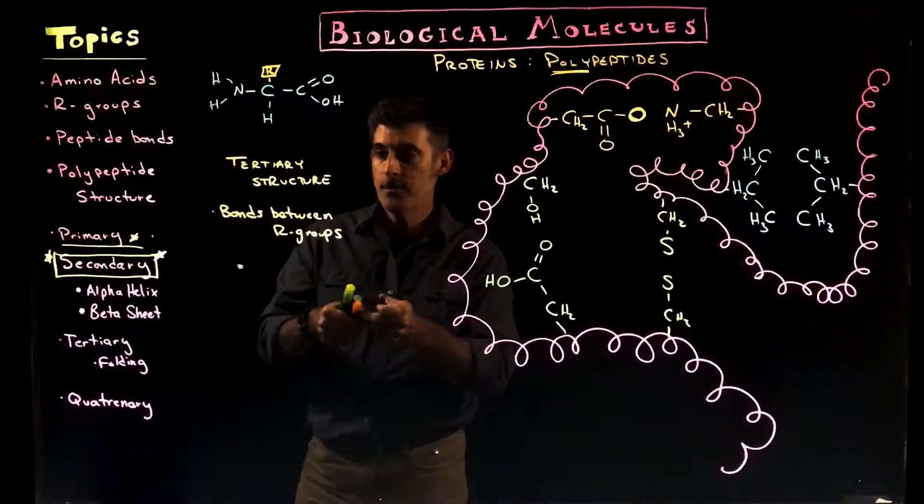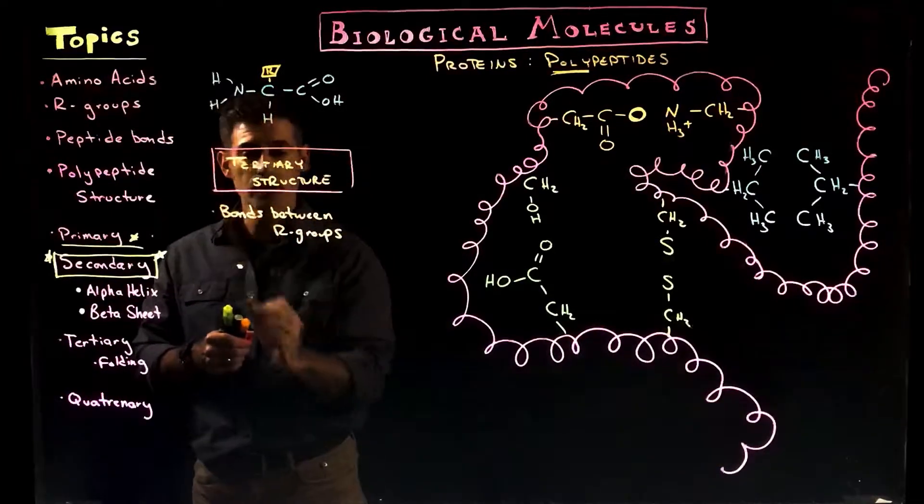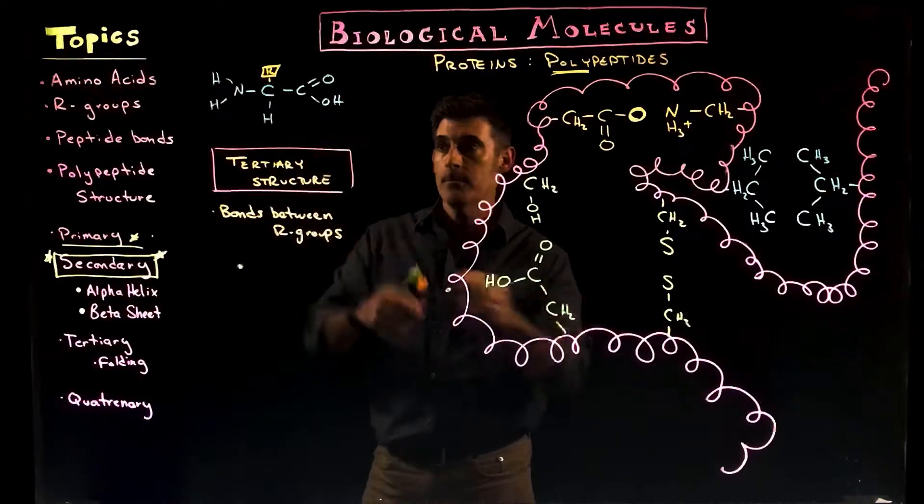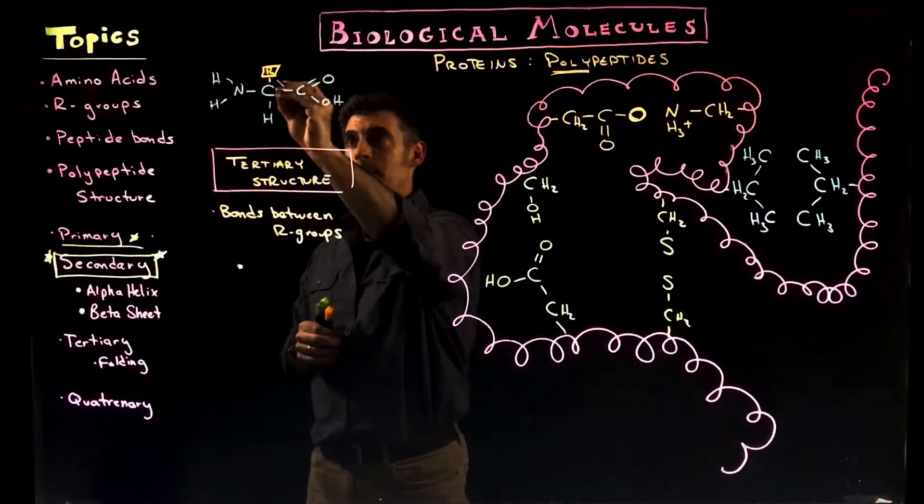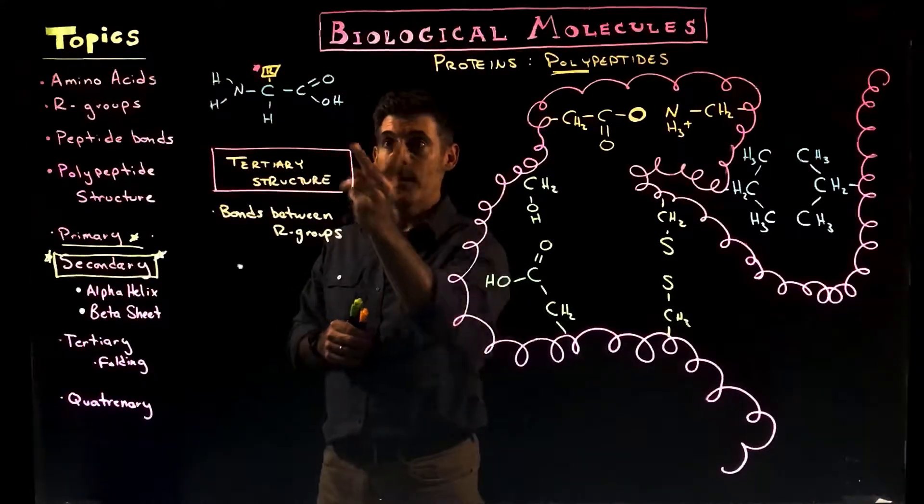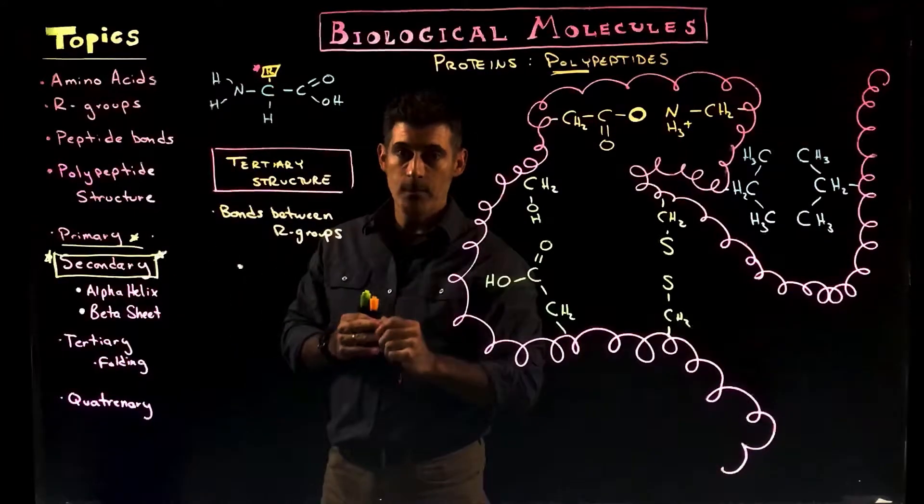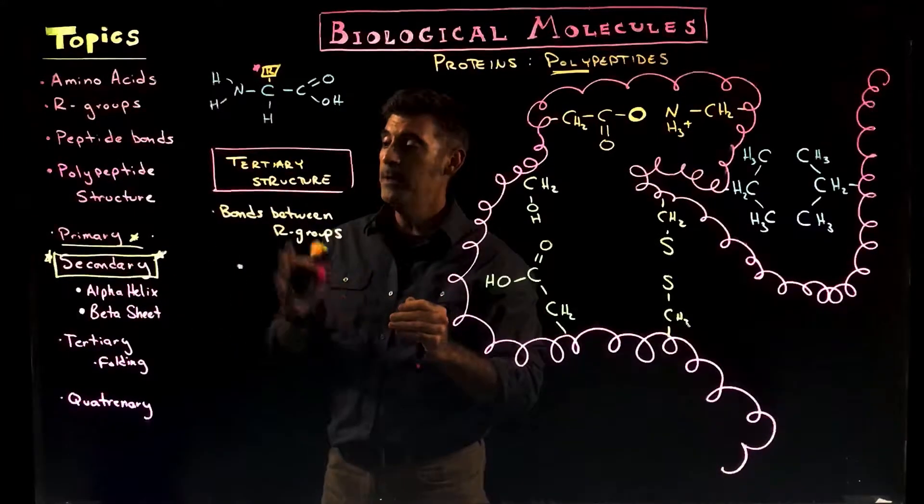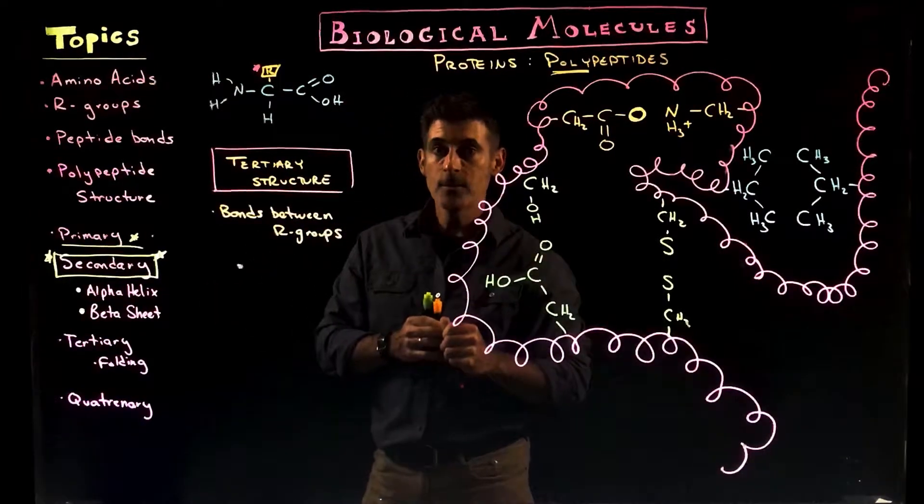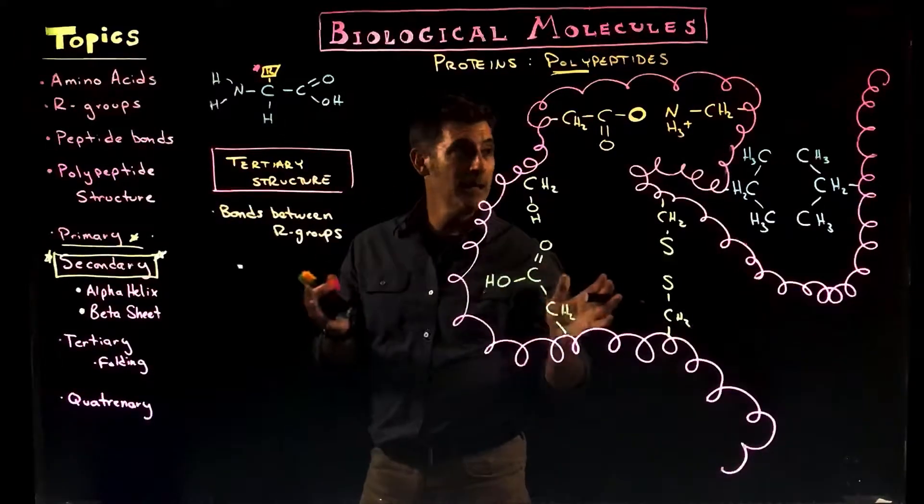So our tertiary structure is this third level of protein structure. There are bonds that are now going to occur between the R groups. Every amino acid is essentially the same except for the unique R group. In the past, the peptide bonds were between amino and carboxyl groups. In secondary structure, it was hydrogen bonds, also between amino and carboxyl groups. Now we're into the third level, our tertiary level of structure, and the bond is between the R groups. What kind of bonds, though?